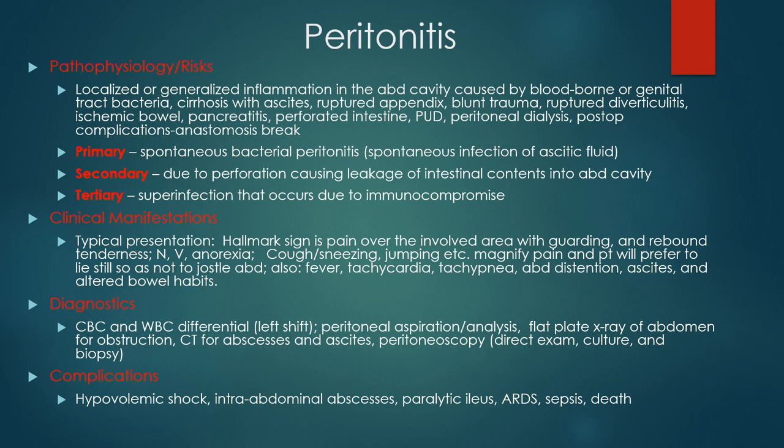A hallmark sign of peritonitis is going to be severe pain over the involved area with guarding and rebound tenderness — the client is not going to want you to touch them whatsoever. They'll have abdominal distension with a rigid, board-like abdomen. Since peritonitis can become sepsis pretty quickly, they'll also have fever, tachycardia, tachypnea, maybe altered level of consciousness, hypotension, and possibly go into shock. Diagnostics include a CBC to look at their white blood cell count and a CT of the abdomen to look for abscesses, ascites, or free fluid, and we can aspirate peritoneal fluid to test it for bacteria.